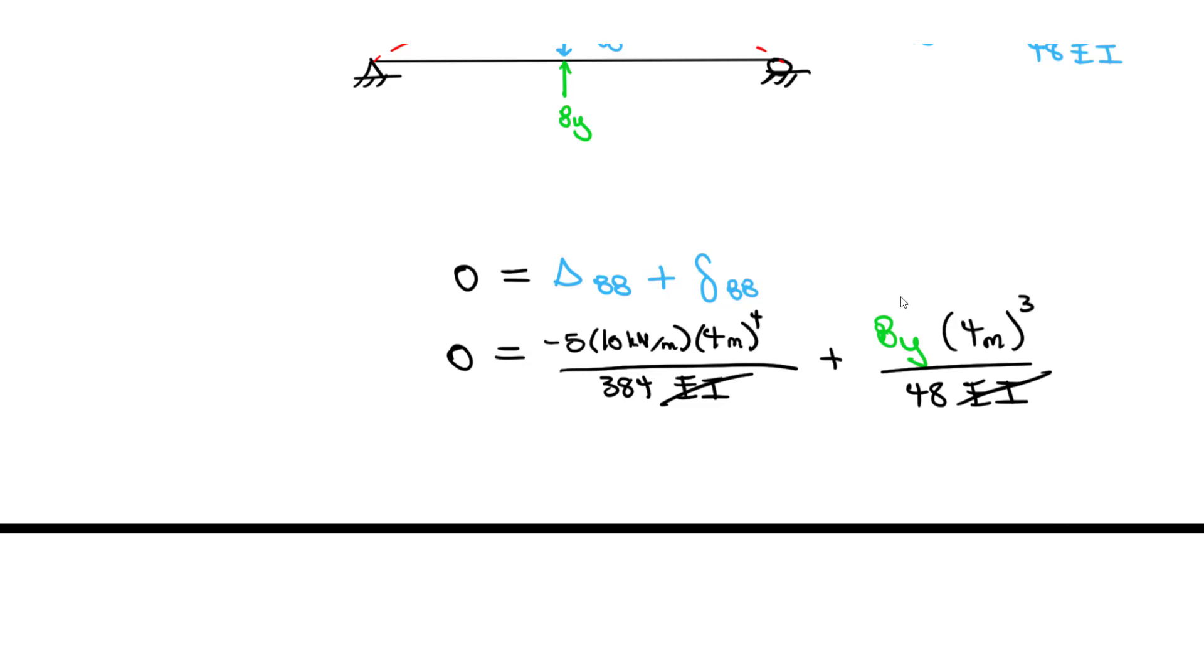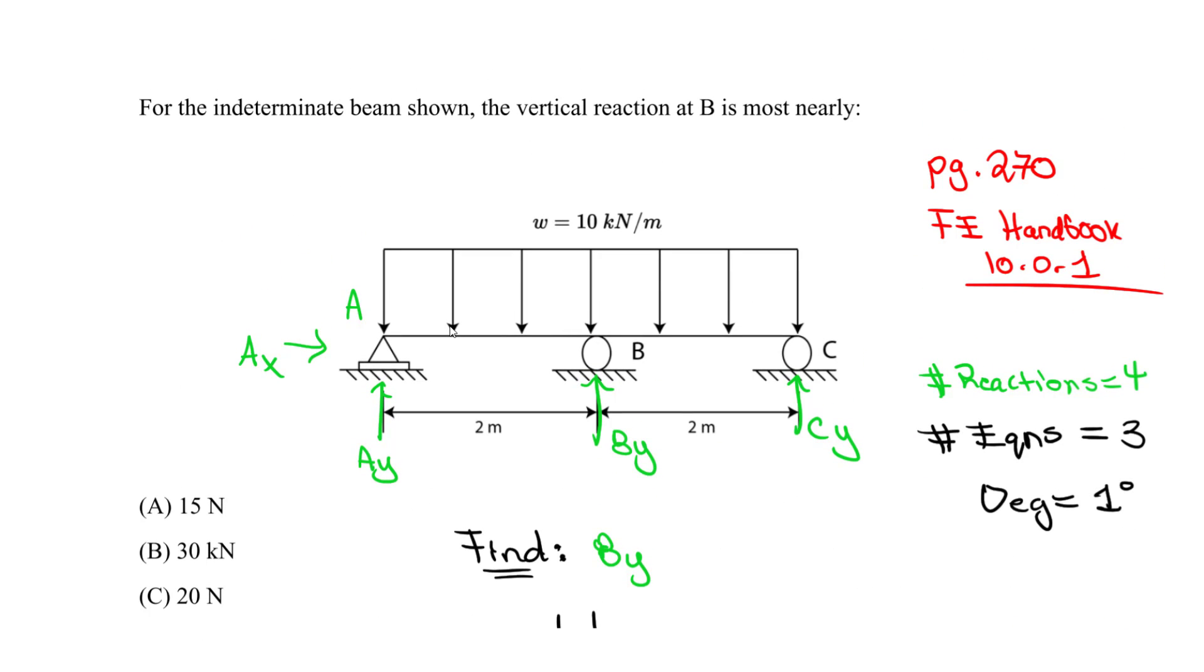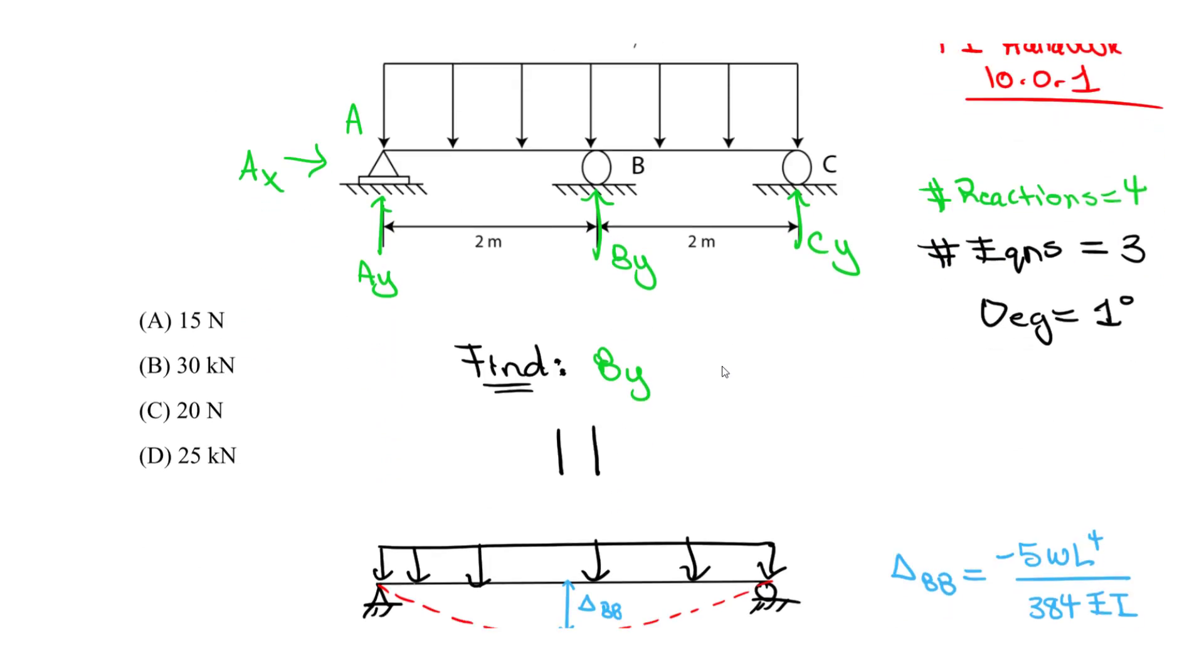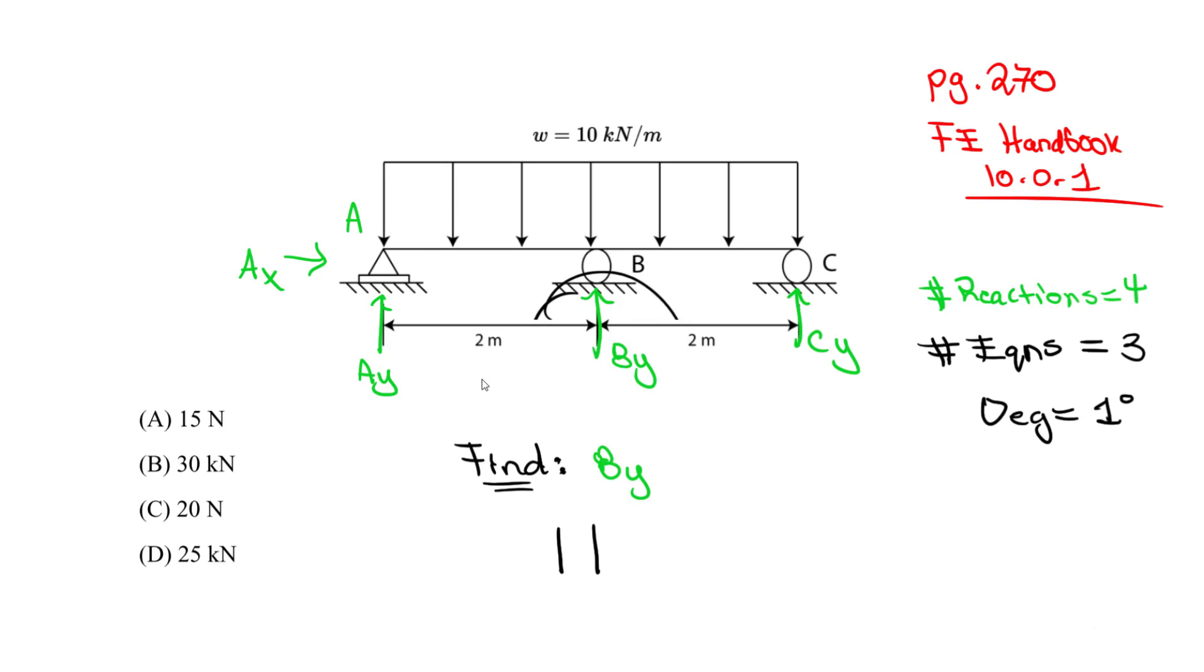I believe you can do this by hand. Let me know if you get what I get. For BY, you should get around 25 kilonewtons. And we just found this reaction. The whole point here is to use this force method because we cannot use statics. We're limited to three equilibrium equations, but here we have four reactions. With BY known, we can finally go back and use statics. We can find the reactions at the pin and this reaction. Then we can design our beam by having our shear moment diagrams. So it should be D.